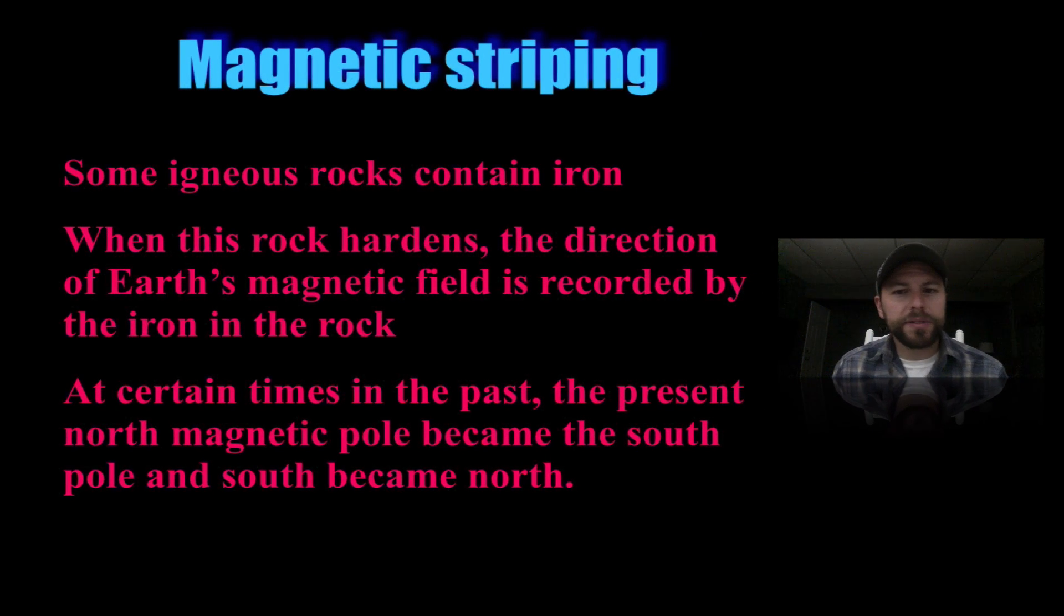Magnetic striping: igneous rocks contain iron or magnetite. When this rock hardens, the direction of Earth's magnetic field is then recorded by the iron in the rock. Remember, when it's magma they're able to shift and move. When it cools and hardens it's frozen in time, it's a marker. In certain times the magnetic field changes, so we see changes in the magnetite grains over time.